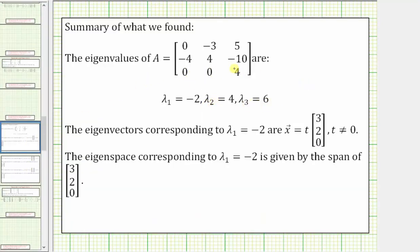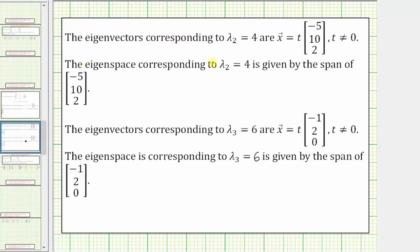We found the three eigenvalues of the square matrix A. The eigenvectors corresponding to lambda equals negative two are vectors of the form t times (3, 2, 0), and the eigenspace is spanned by the vector (3, 2, 0). The eigenvectors corresponding to lambda equals four have the eigenspace spanned by (-5, 10, 2). The eigenvectors corresponding to lambda equals six have the eigenspace spanned by (-1, 2, 0).